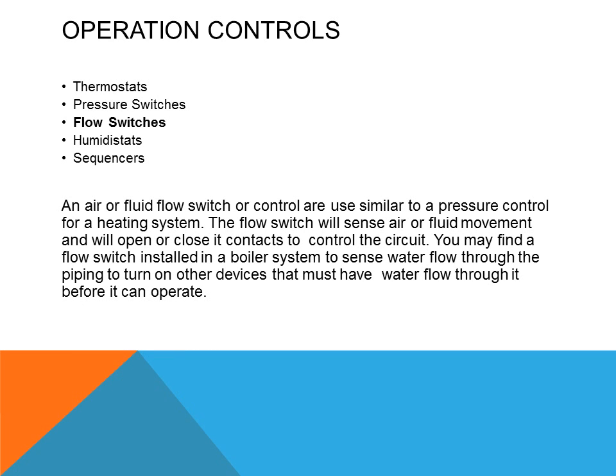An air or fluid flow switch or control is used similarly to pressure control for the heating system. The flow switch will sense air or fluid movement and will open or close its contacts to control the circuit. You may find a flow switch installed in a boiler system to sense water flow through the piping, to turn on other devices that must have water flow through them before they can operate.